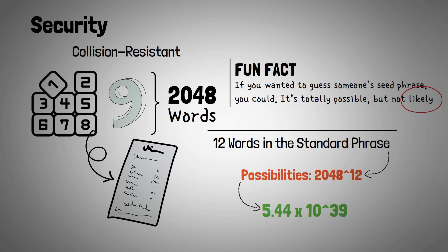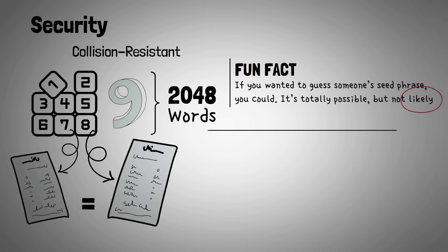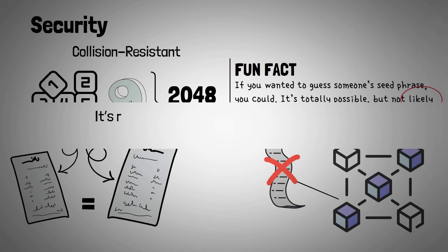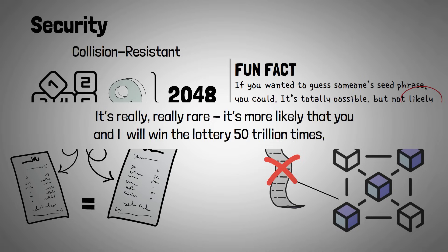You'll notice how we say that it's unlikely, because it is possible to generate the same seed phrase randomly twice. The blockchain doesn't keep track of the seed phrases that are used, for obvious security reasons, so there's no mechanism stopping one wallet from accidentally generating the same seed phrase as another wallet. It's really, really rare, and it's more likely that you and I will win the lottery 50 trillion times each.